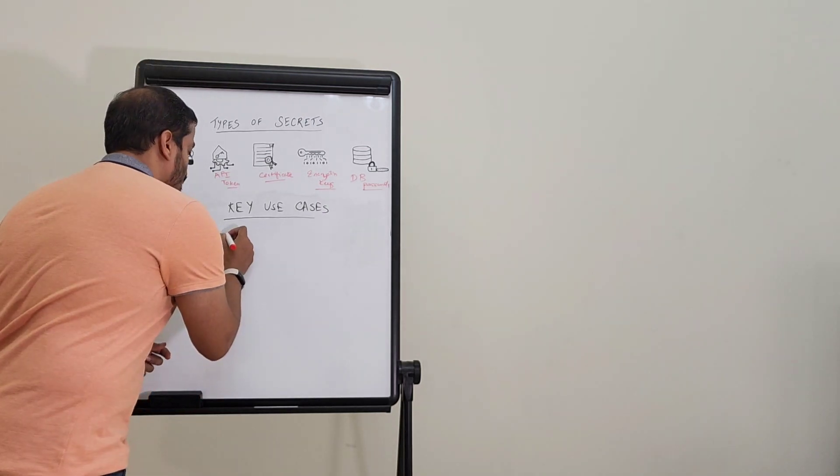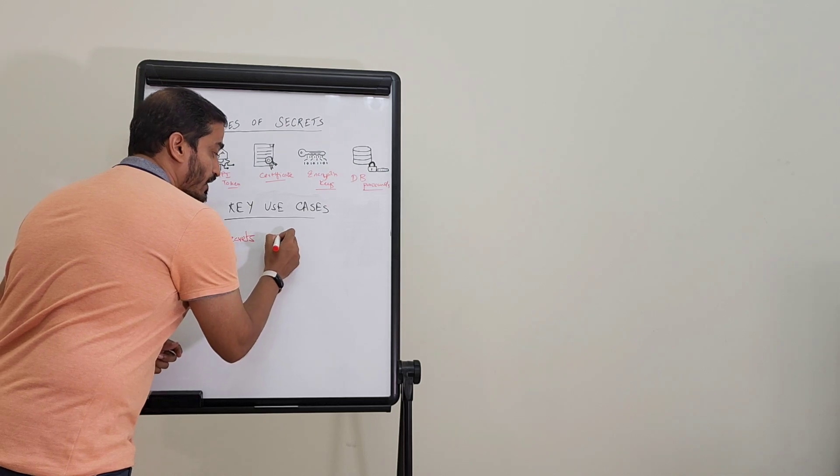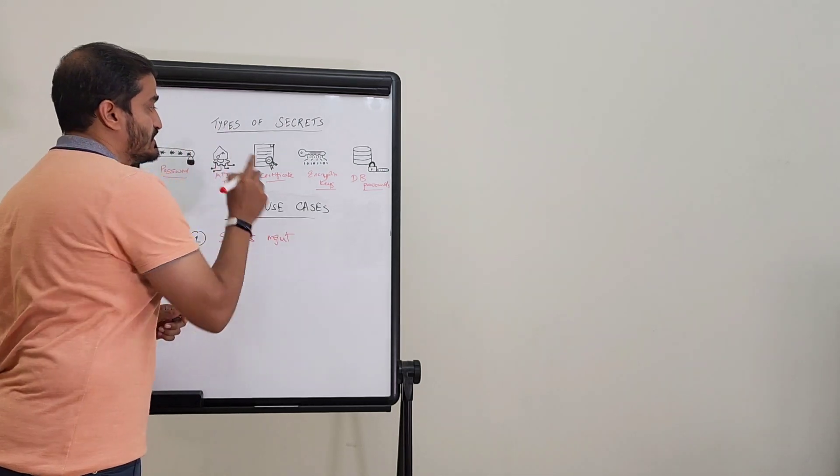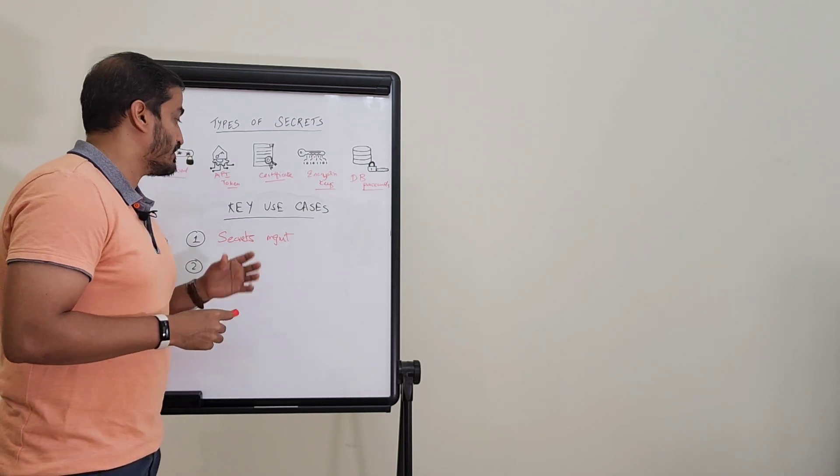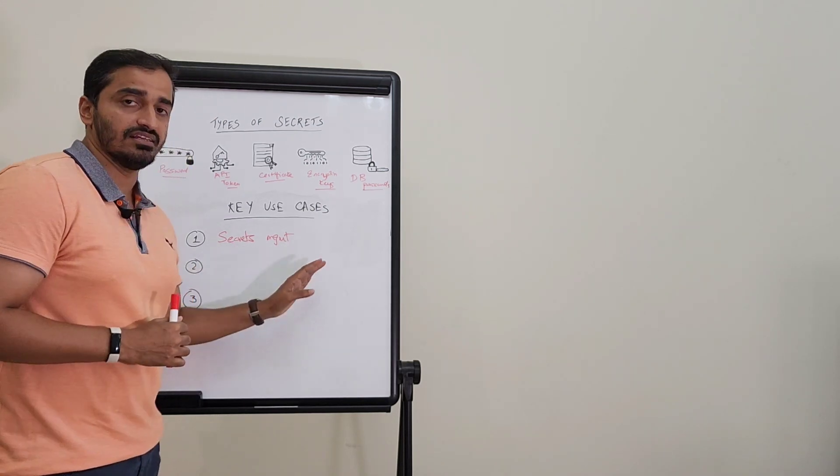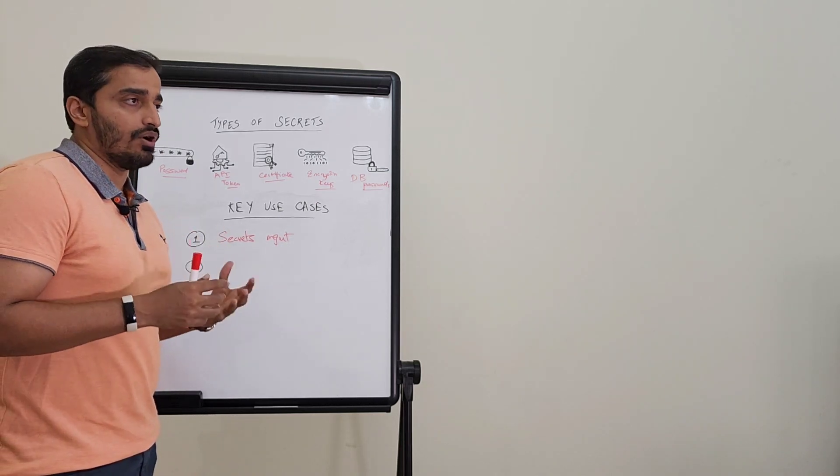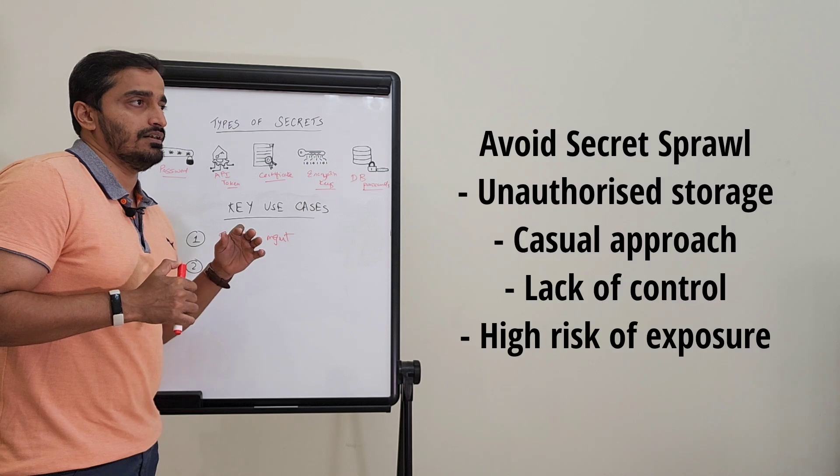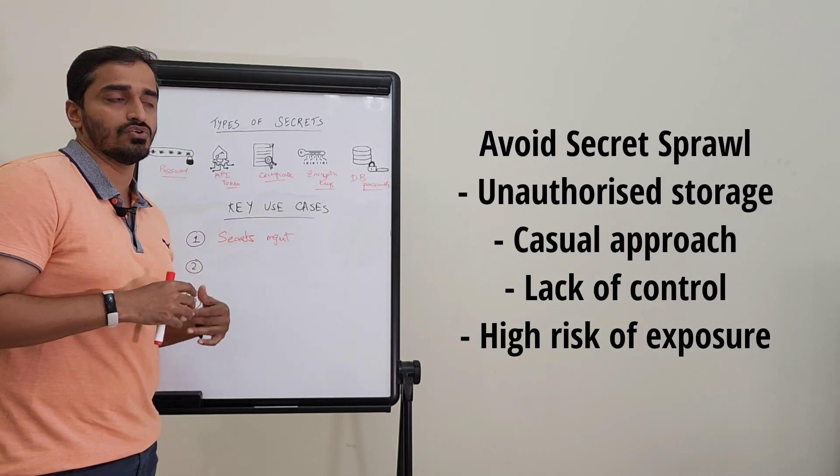The first use case is essentially secrets management itself. Covering all the secrets that we covered in the last video, the basic criteria to be able to manage secrets is to avoid something known as secret sprawl. Sprawl is nothing but secrets being present in different unauthorized places.